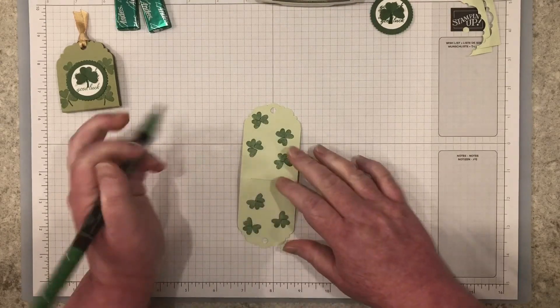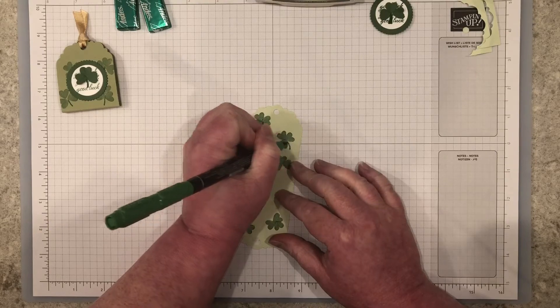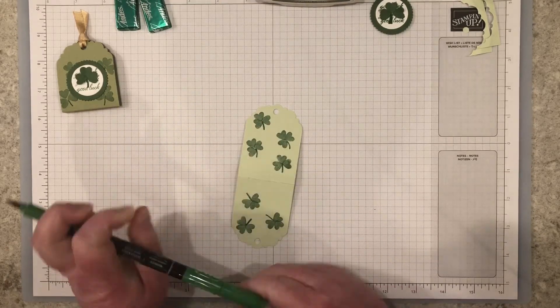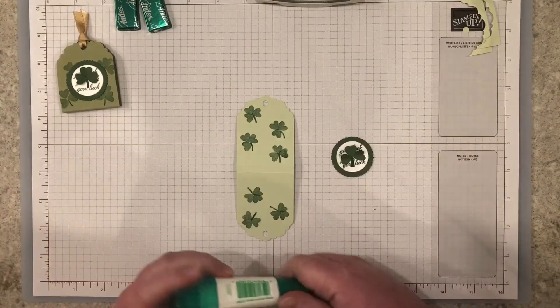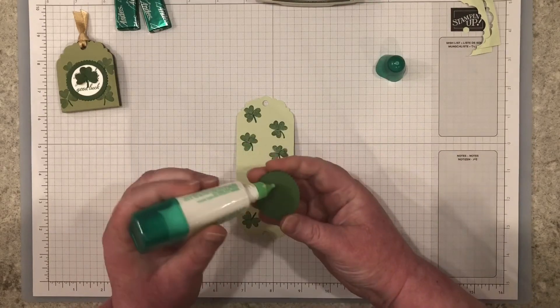Next, draw stems on each of your shamrocks with the garden green Stampin' Write marker. Next, adhere the shamrock and the scallop circle to the front of your treat holder.